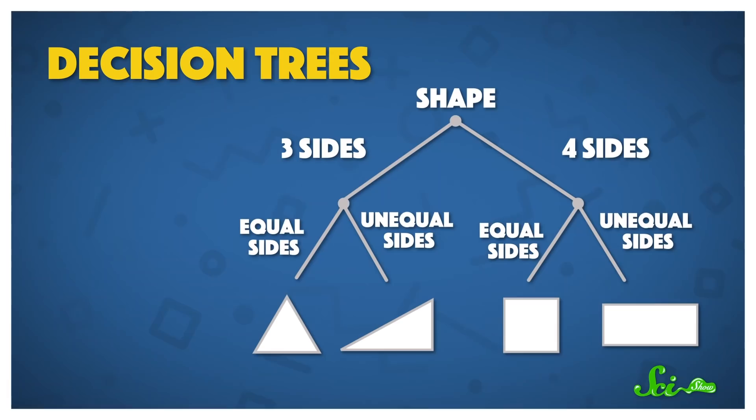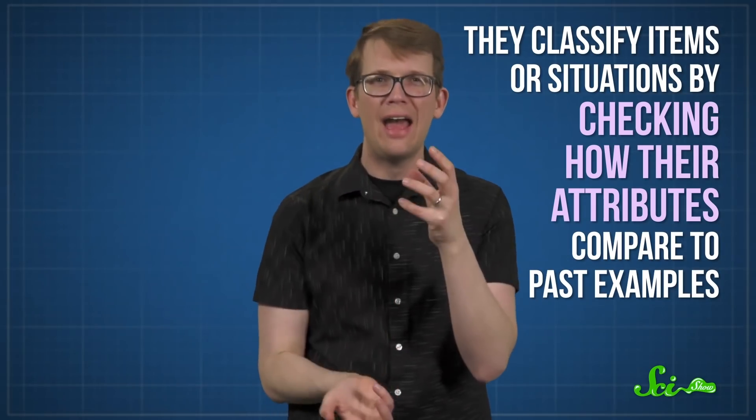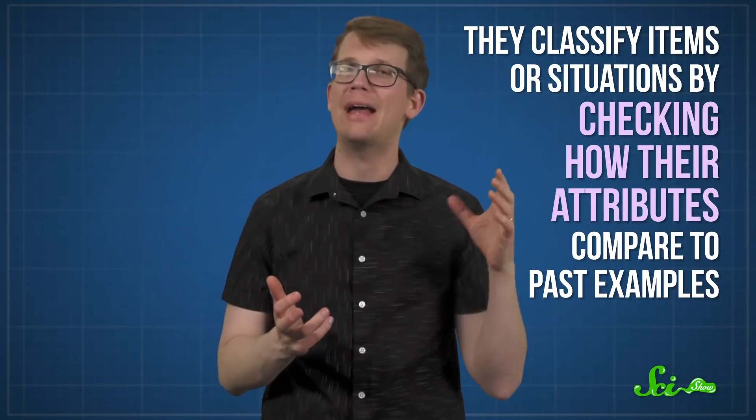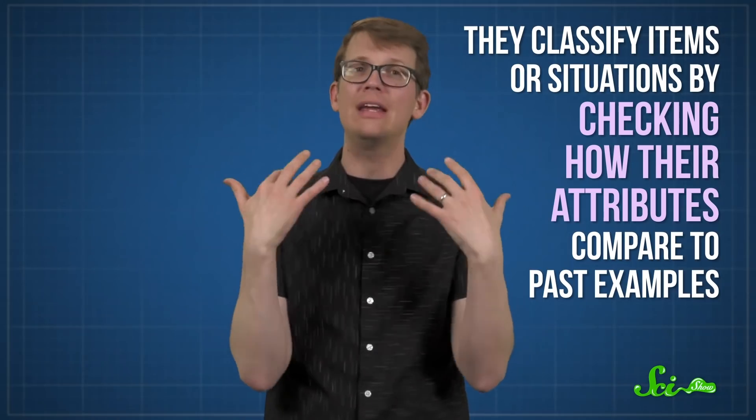A class of algorithms called decision trees have also quietly lurked behind the scenes, helping scientists and companies sort through data for decades, and helping you in ways you might not expect. Like neural networks, decision trees also emulate humans. But instead of copying the layout of our brain, they mimic the way we reason. They classify items or situations by checking how their attributes compare to past examples. Kind of like playing a guessing game.